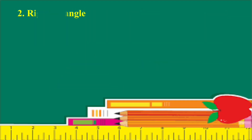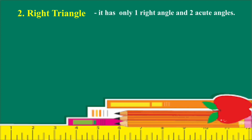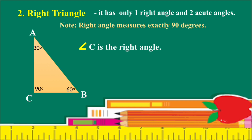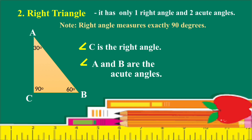Next is the Right Triangle — a triangle with only one right angle and two acute angles. Note that a right angle measures exactly 90 degrees. For example, triangle ABC where angle A is 30 degrees, angle B is 60 degrees, and angle C is 90 degrees. Angle C is the right angle, and angles A and B are acute angles.